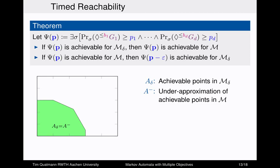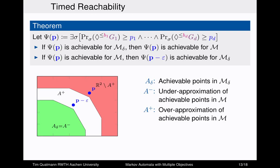The second part of the theorem states that if a point is achievable in the Markov automaton, then P minus epsilon must be achievable in the digitization. So if a candidate point cannot be achieved in M_delta, we can conclude it is not achievable in the Markov automaton either — similarly for any point in the red area. This gives us our approximation of the set of achievable points.